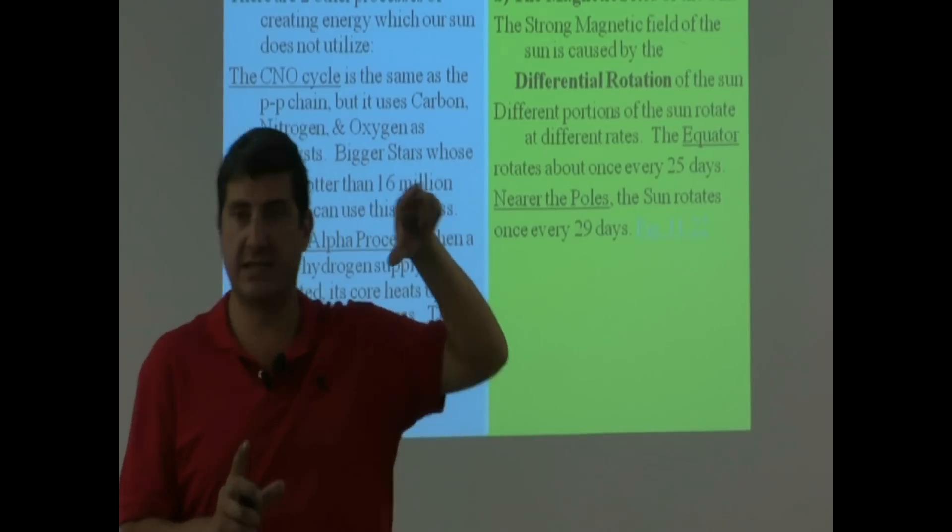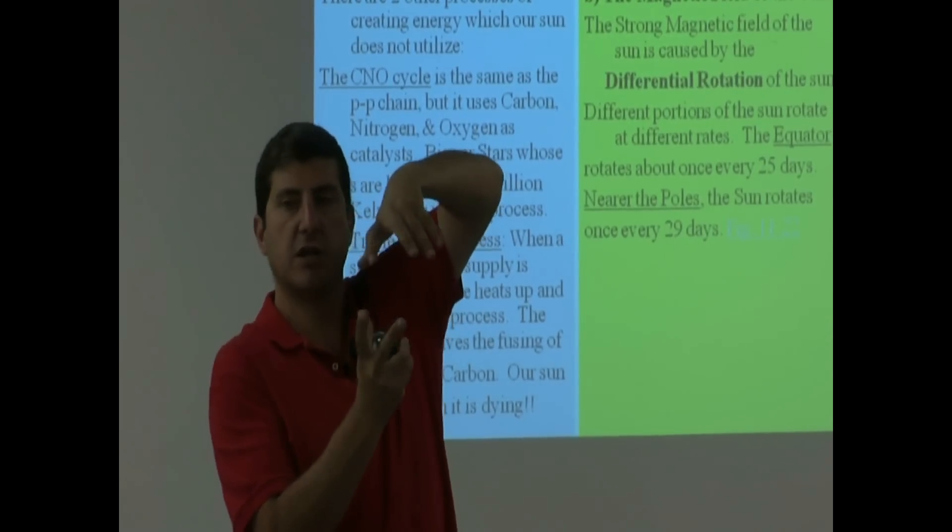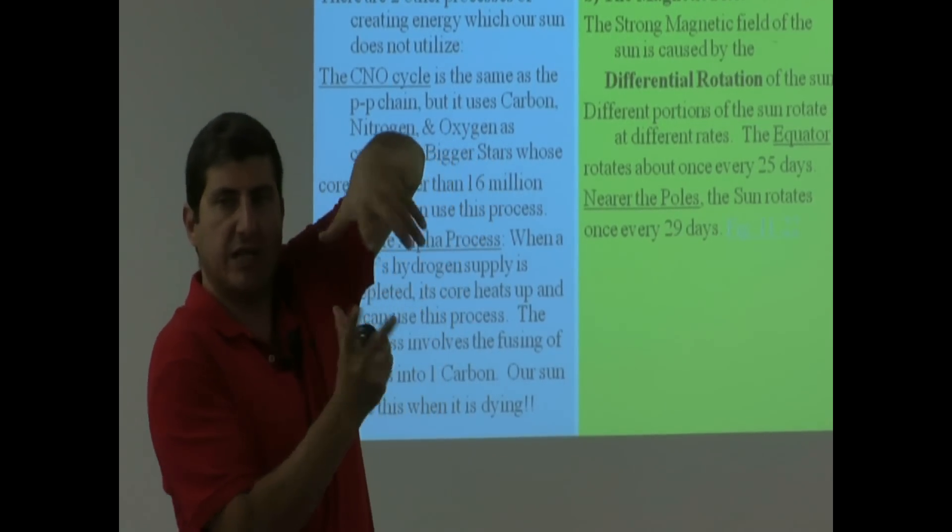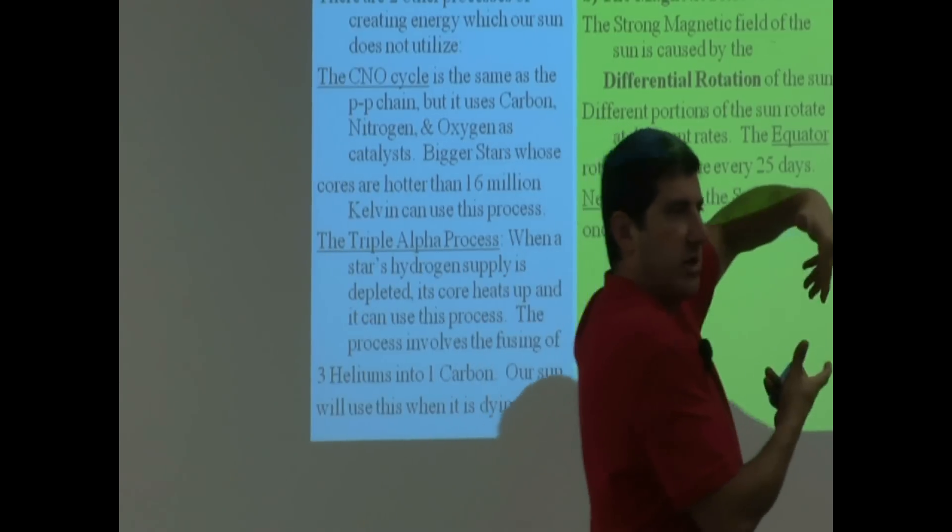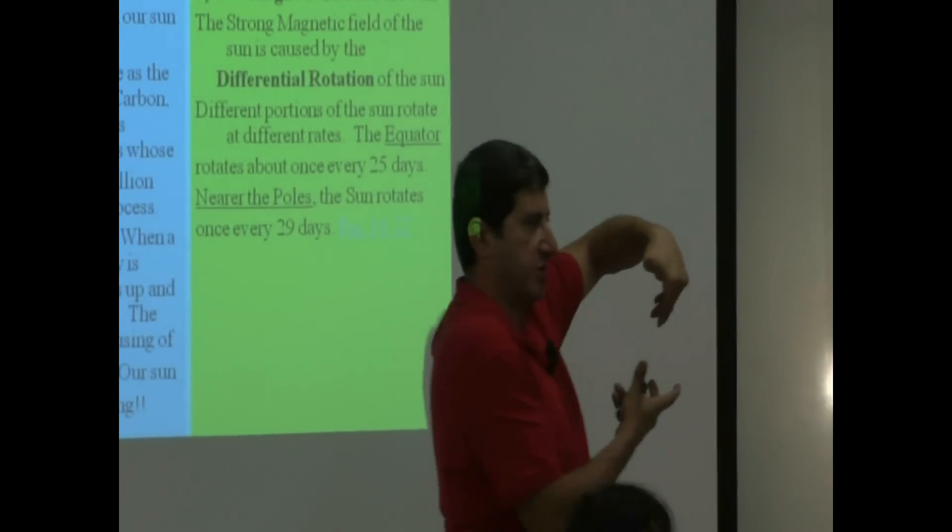The Sun is unlike a planet. A planet must rotate more or less at the same rate, no matter where you live. Like Earth, no matter where you live, you're going to rotate once every 24 hours.